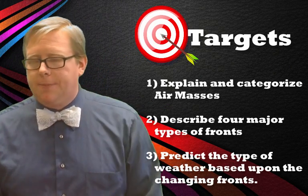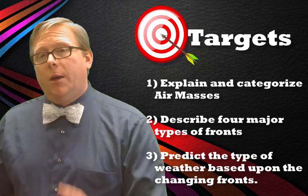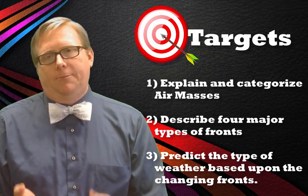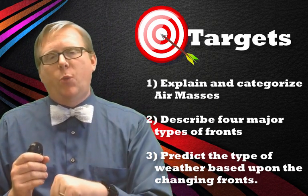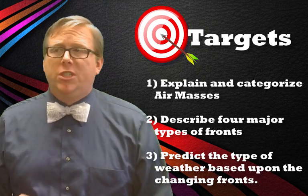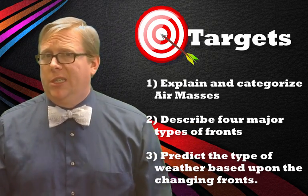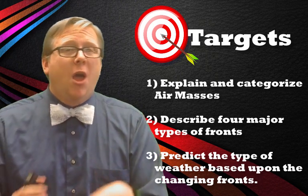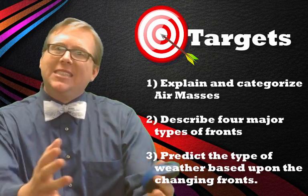In this video, we did three things. We defined and categorized different air masses: maritime polar, maritime tropical, continental polar, and continental tropical — determined by where they're formed and what the temperature is. We looked at the four types of fronts — the boundary between two air masses is called a front. A cold front brings lots of storms and thunderstorms; a warm front brings drizzle; an occluded front brings heavy rain right when it happens; and a stationary front is pretty boring. And lastly, we predicted the type of weather based upon changing fronts, and saw that Oregon gets a lot of rain because of the maritime air masses coming in off the coast.